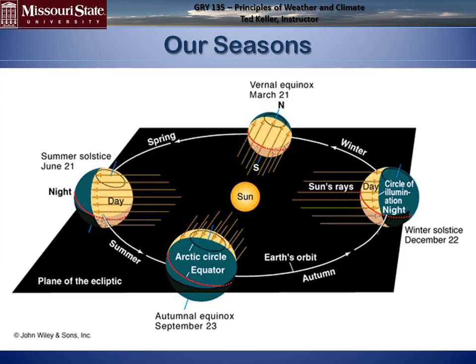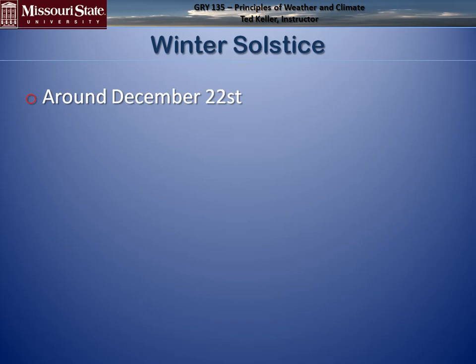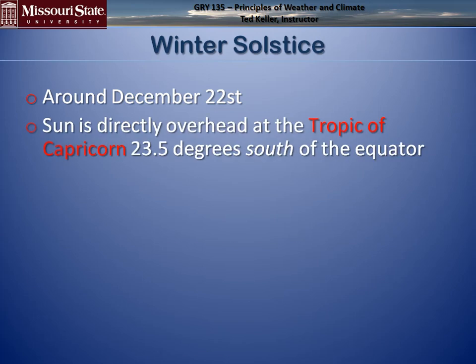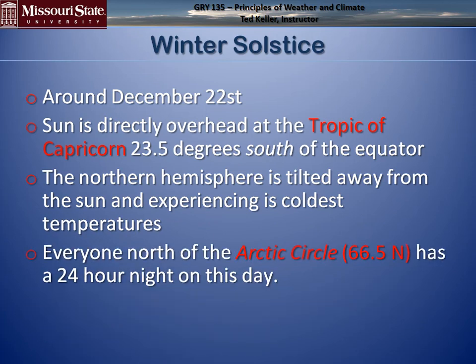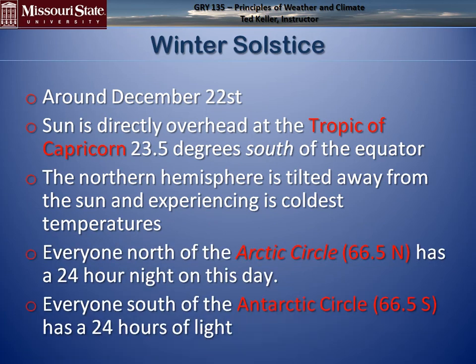Here's a good diagram of our seasons. Note that the Earth's relative tilt of 23.5 degrees is always pointed in the same direction. At the winter solstice around December 22nd, the Sun is directly overhead at the Tropic of Capricorn, south of the equator. The northern hemisphere is tilted away and getting cold. Everyone north of the Arctic Circle has 24 hours of night, and everyone south of the Antarctic Circle has 24 hours of light.